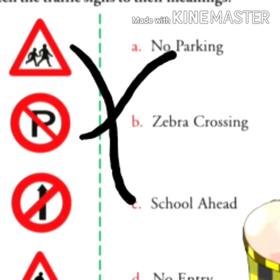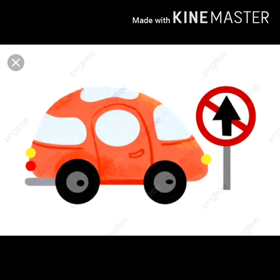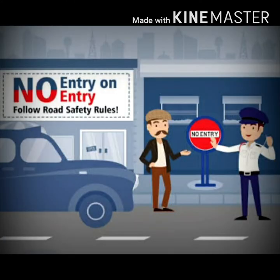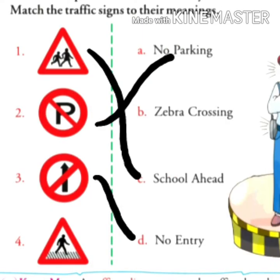For number three, these traffic signs are located at places where vehicles are not allowed to enter. So the meaning of this traffic sign is no entry. Number three is no entry.